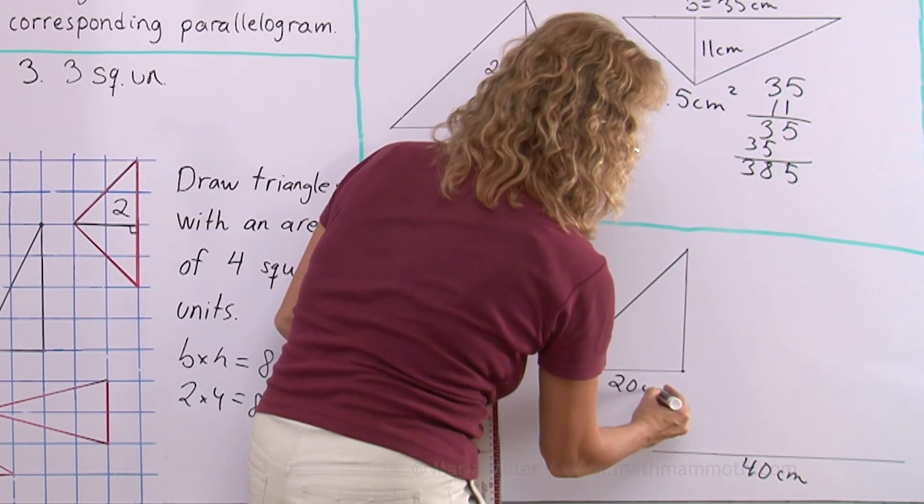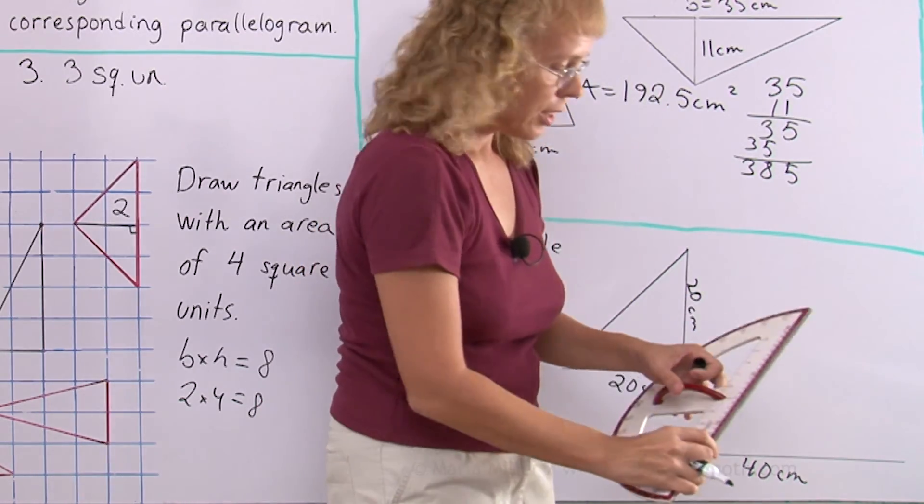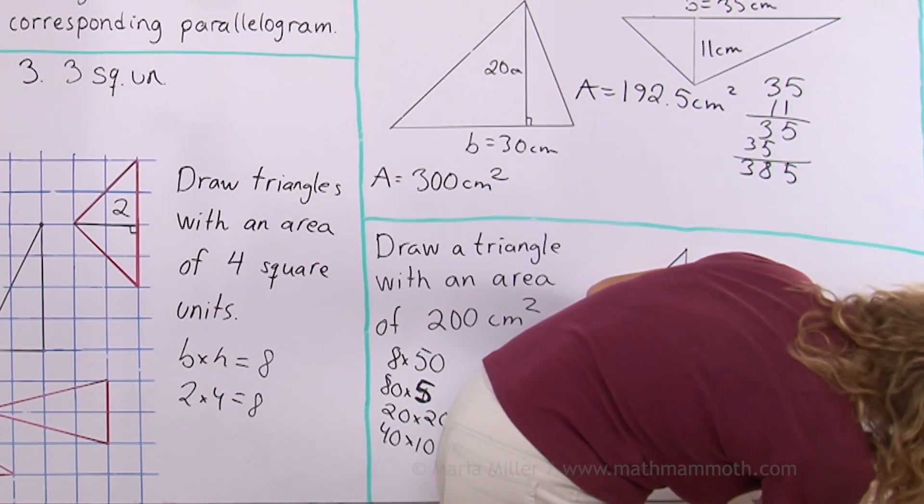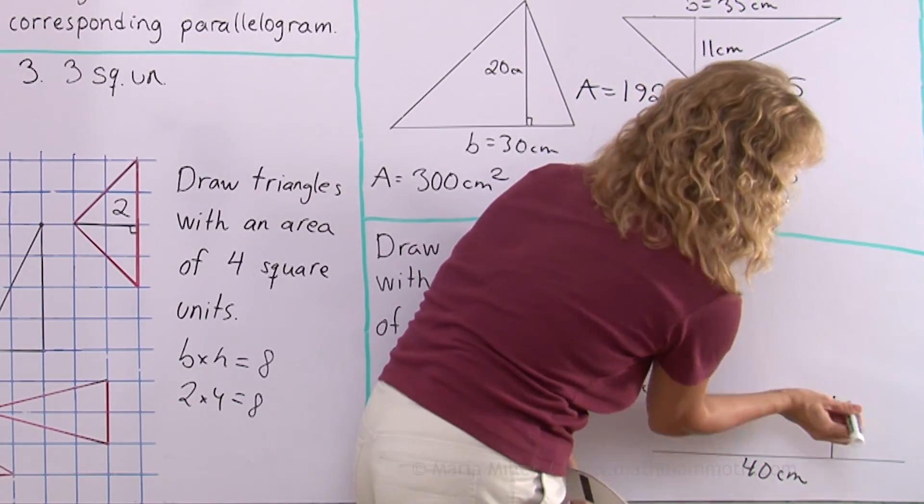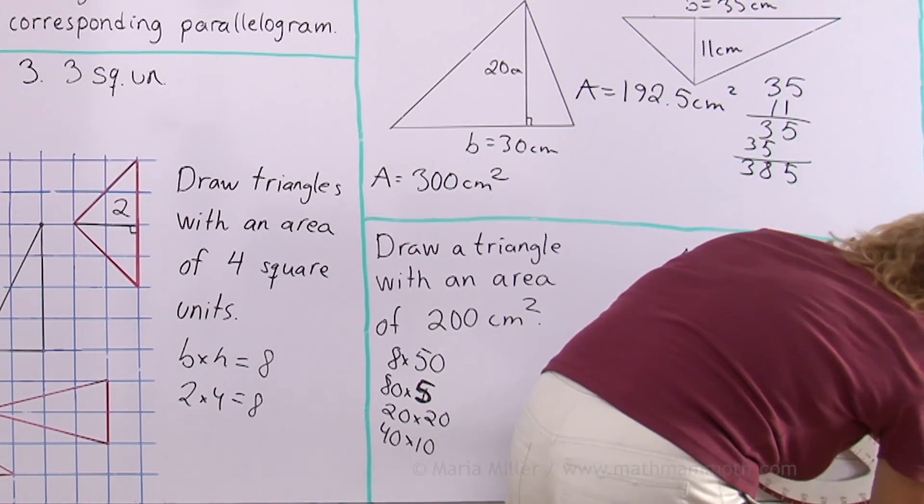And now I draw 10 centimeters for my altitude. There. And of course this will be now my vertex of the triangle. So then I just draw in the lines, the sides.